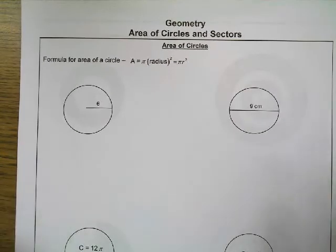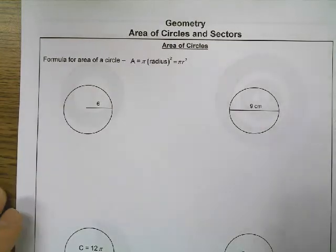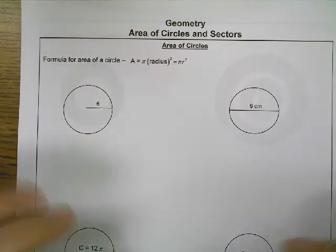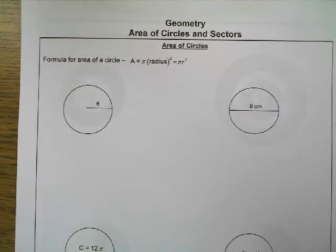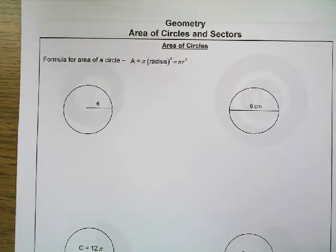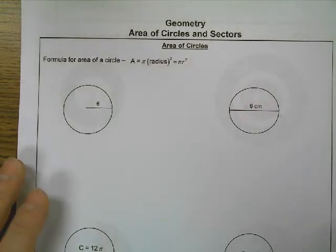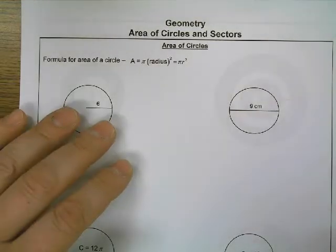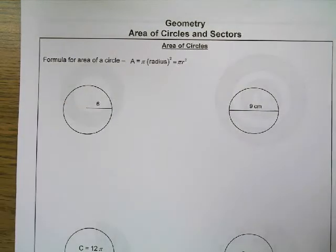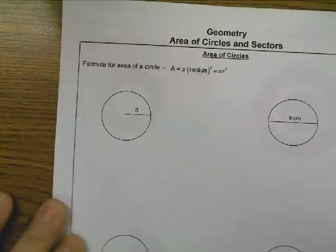The area formula for a circle is pi times the radius squared, or pi r squared. So you just need to find the radius and plug it in. Remember, the radius is half of the diameter. So if they give you the diameter, then you have to divide that by two to get the radius.